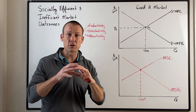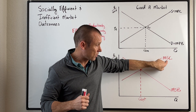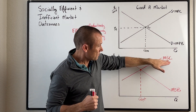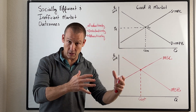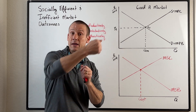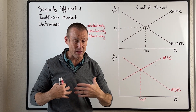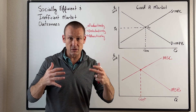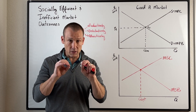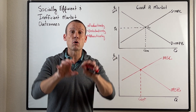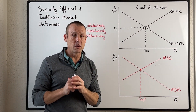The big market failure you'll encounter is externalities, which is what I'm going to focus on since I've got marginal social cost and marginal social benefit curves here. An externality is when market activity — the production or consumption of a good — creates an external cost or benefit to people other than the market participants. Market participants only consider their private cost and private benefit; they don't take external costs or benefits into their decision-making. When externalities exist, markets will be socially inefficient.